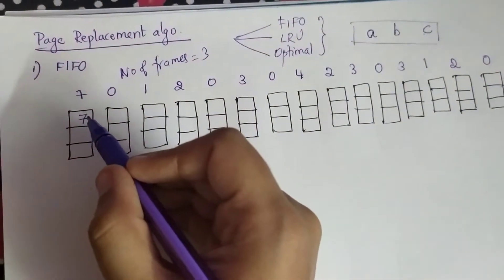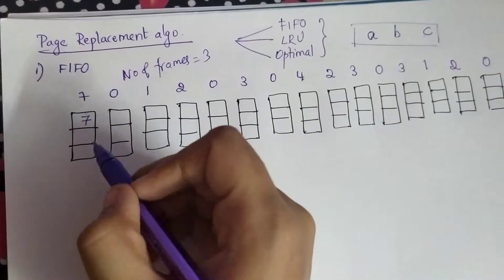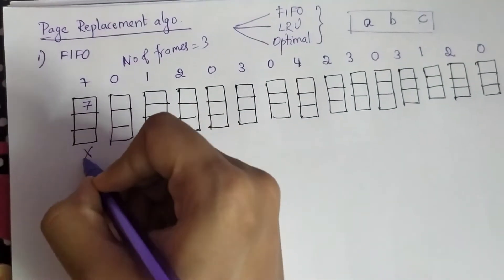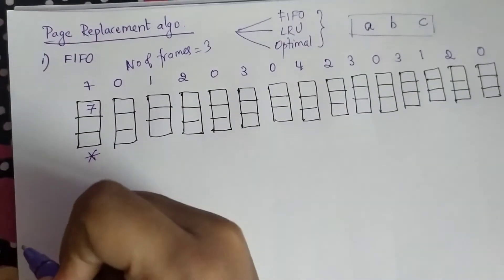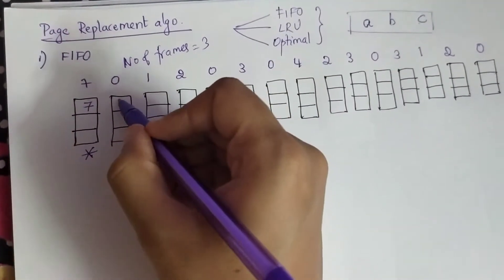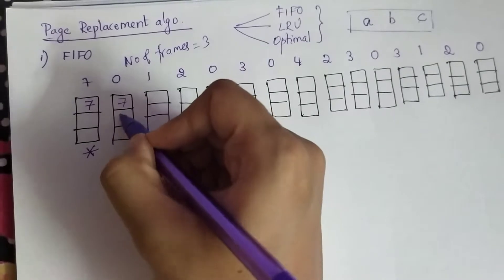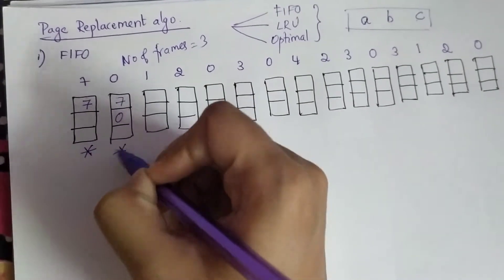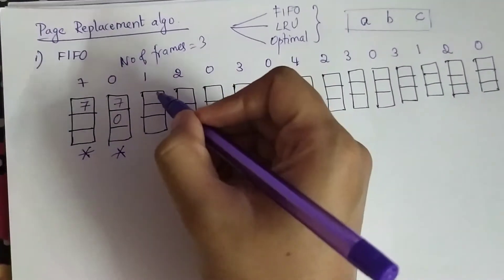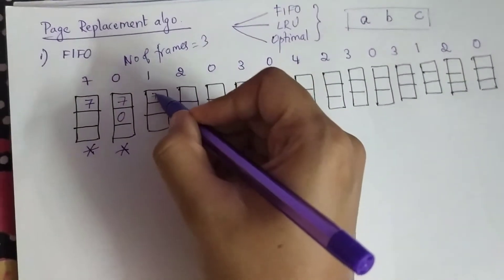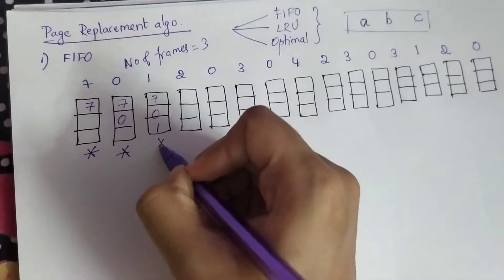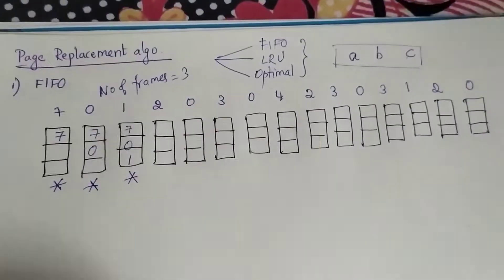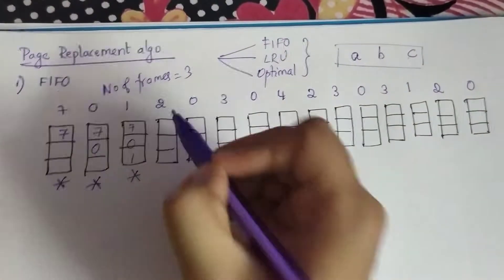The first entry is a page fault because the page is not already in memory, so you can mark a star. Now you have zero — add seven and zero to the next cell. This is also a page fault. Now you have seven, zero, one — you can mark a page fault here as well.